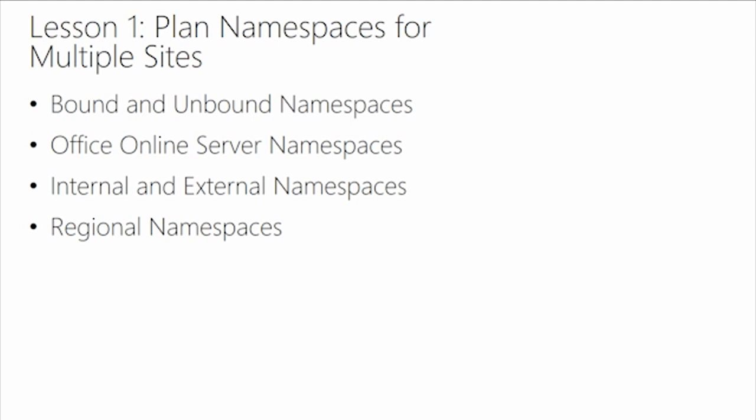When it comes to namespace planning, we have a couple of options: a bound model or an unbound model. We also have the Office Online Server namespace that you have to specify. The Office Online namespace is advertised to Outlook on the Web so it can do document rendering when people want to view documents inside Outlook on the Web — that display is created through an iframe. If it's not properly published with the right namespace, people will not be able to connect and see attachments inside the web browser.